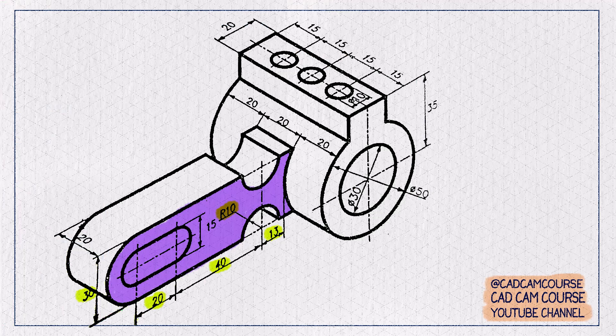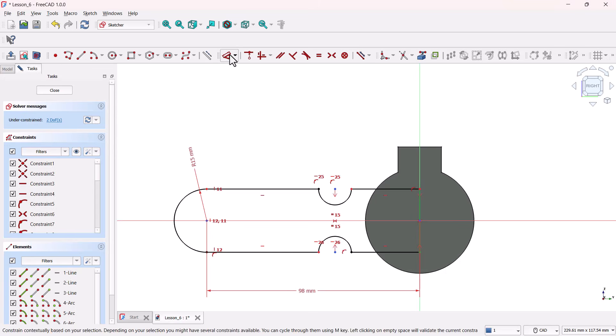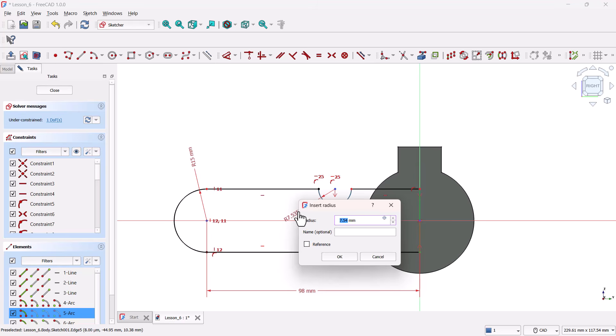Next up, let's define the radius of these circles. Now, grab the dimension tool and add radius to one of these circles as 10 millimeters.